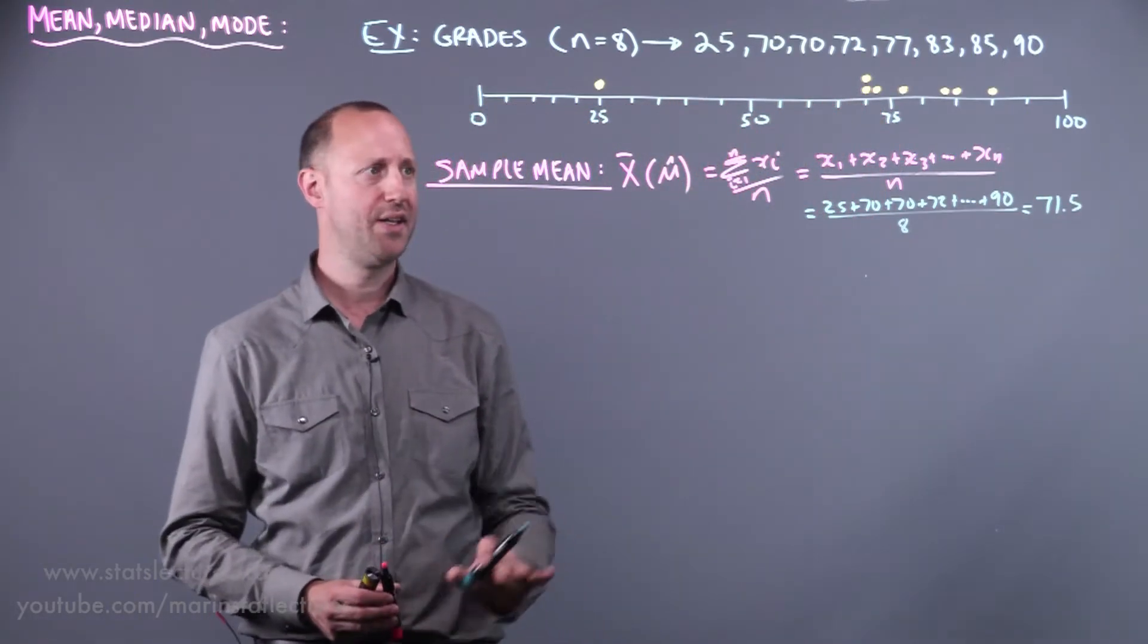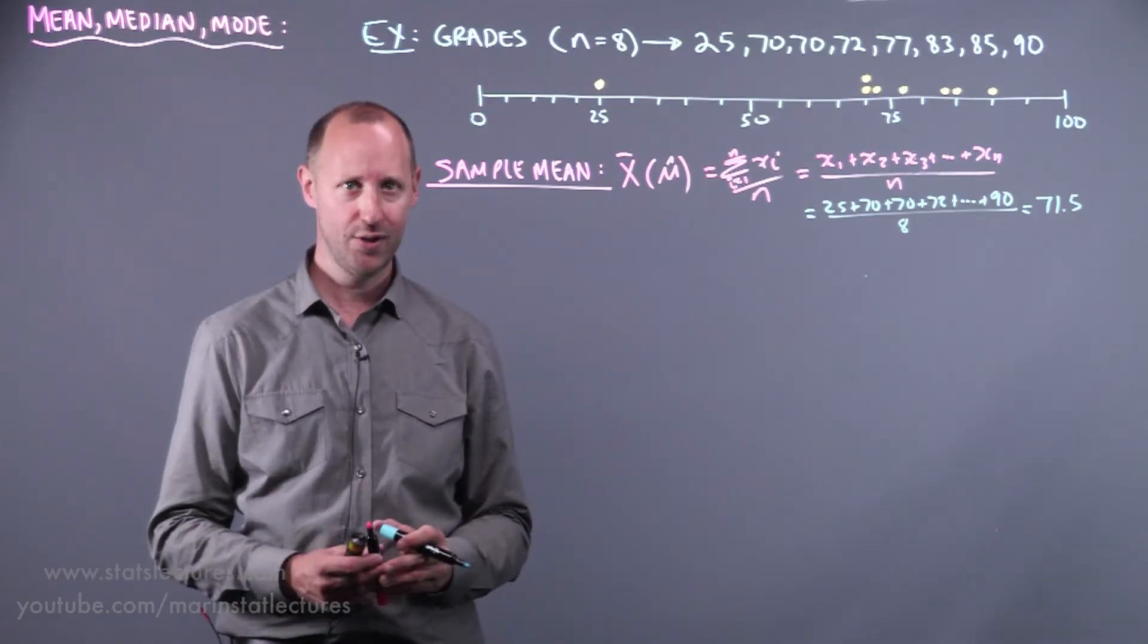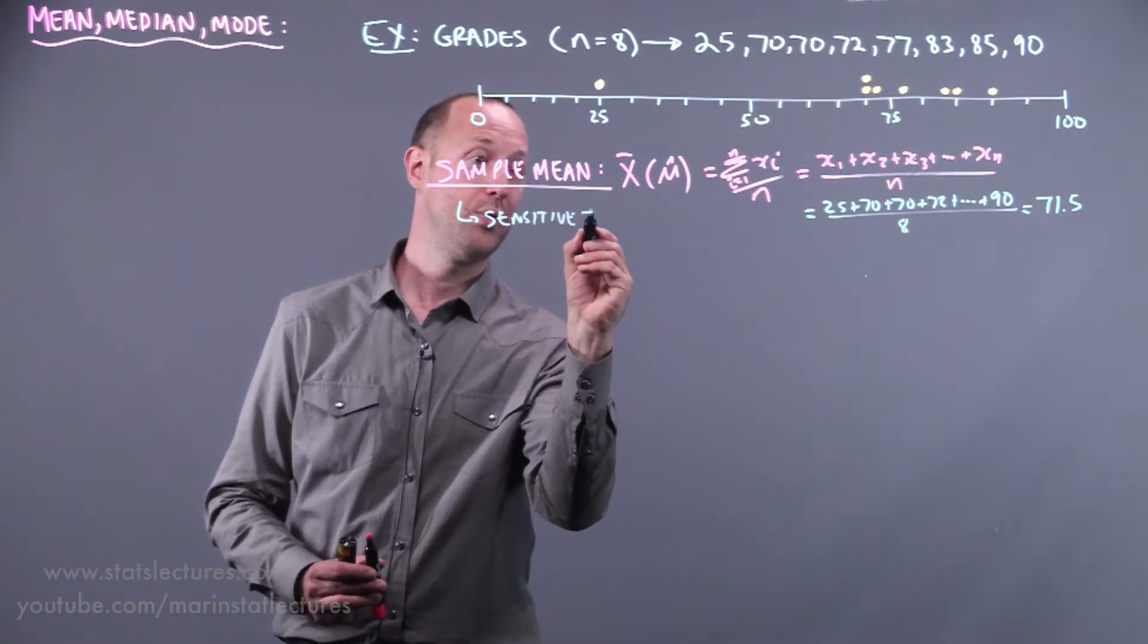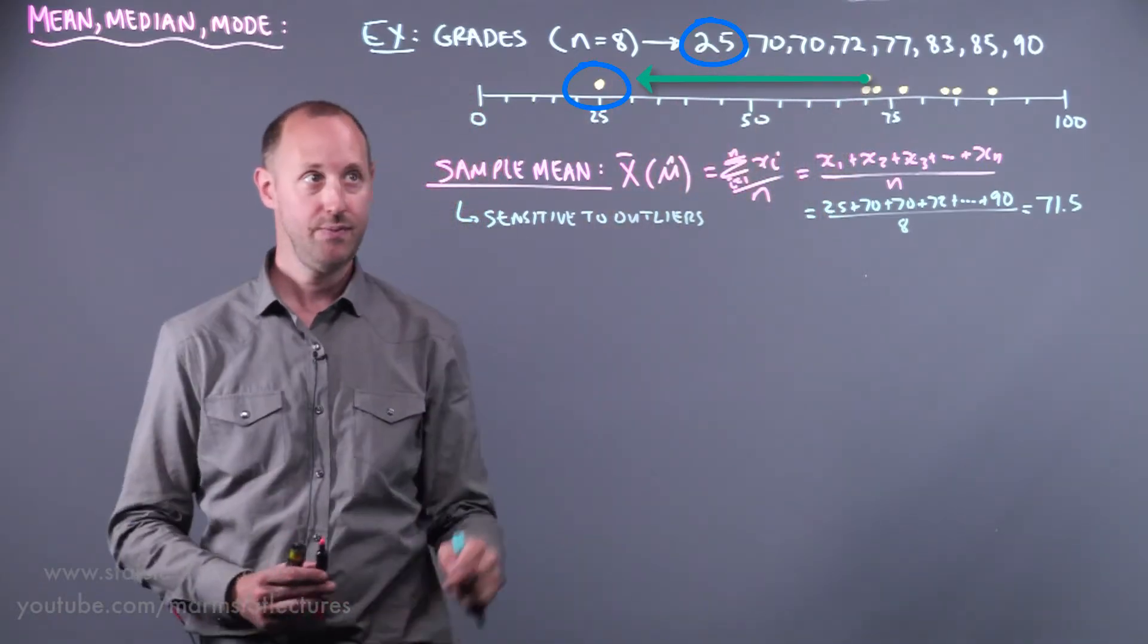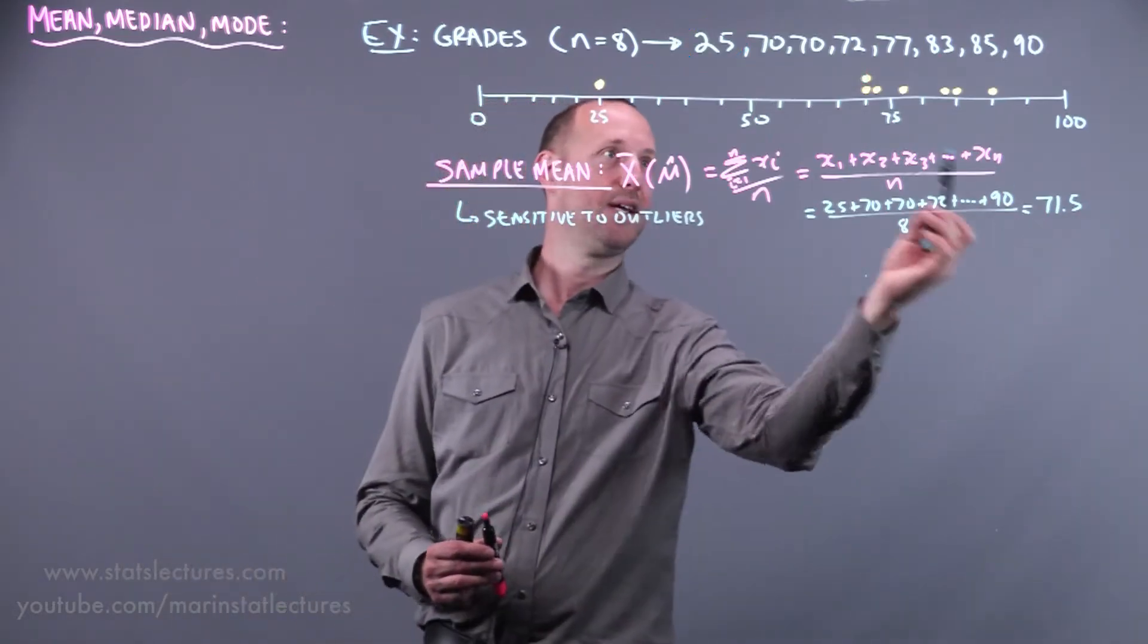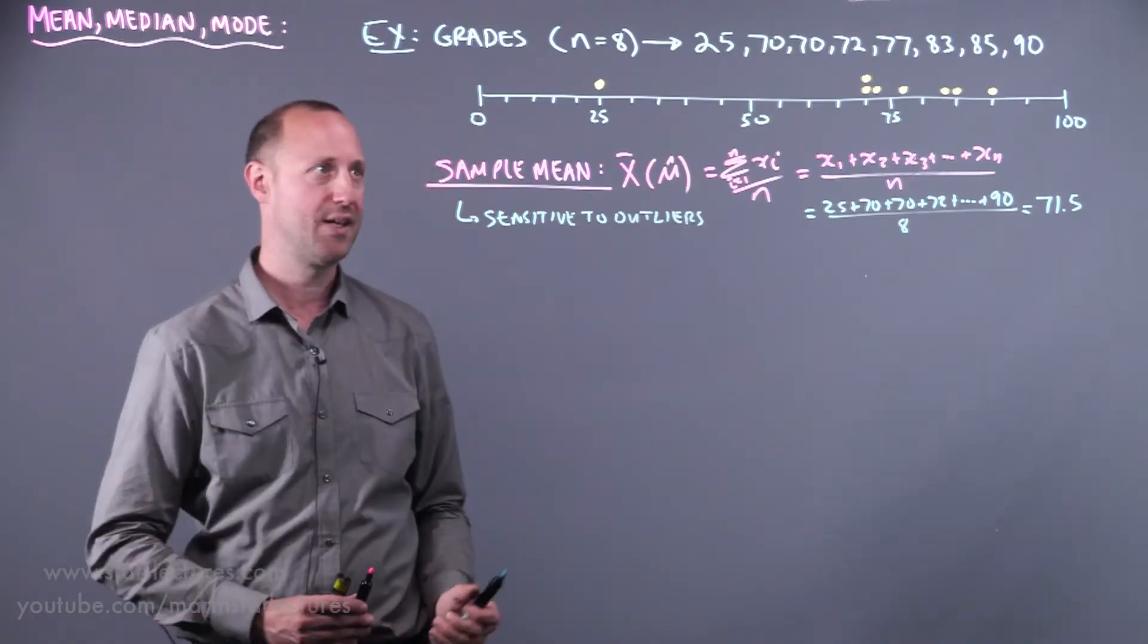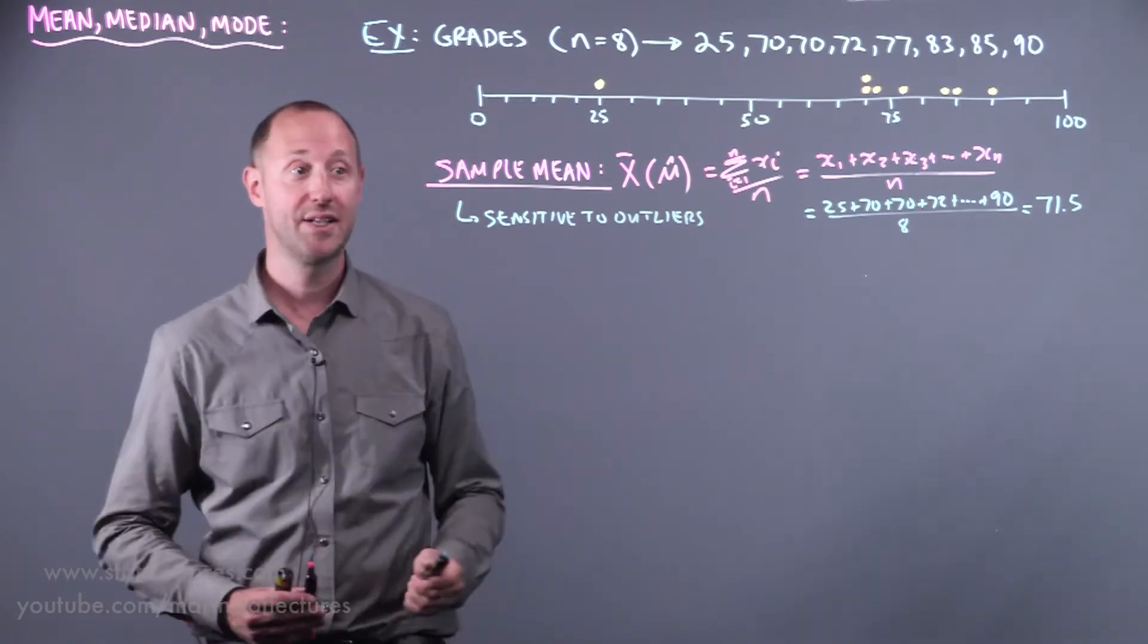Likely not a new idea, but this does a few things. It gets us used to a little bit of notation and we're also going to hopefully learn to think about the mean in a slightly different way. A few things to note about the sample mean is that it's sensitive to outliers. When there's outlying values or extreme values, the mean can get pulled towards those. This small grade of 25 is pulling the mean towards it. We can see the mean is 71.5. If we were to use other descriptions of the center, we might use something a little bit closer to 75 or 77. The key point is that the mean is sensitive to outliers or skewness or extreme values and it gets pulled towards those.